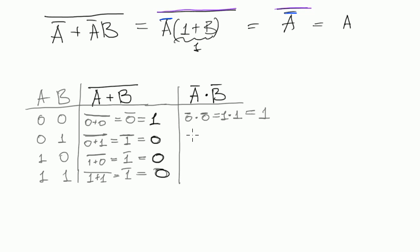Then 0 negated multiplied by 1 negated, which is 1 multiplied by 0, which is 0. Then the same but in different order, which is 0 by 1 equals 0. And last one, 1 negated multiplied by 1 negated. It will be both 0s and 0.